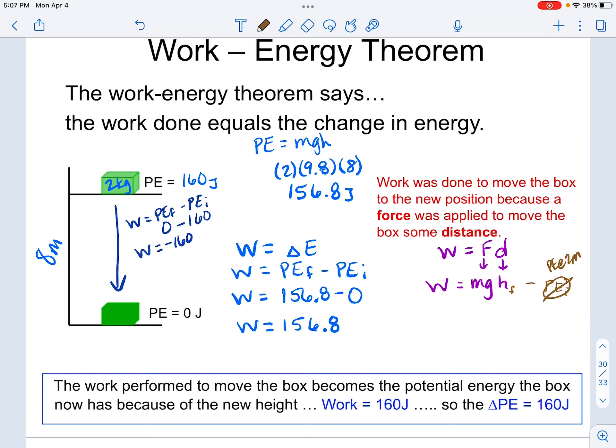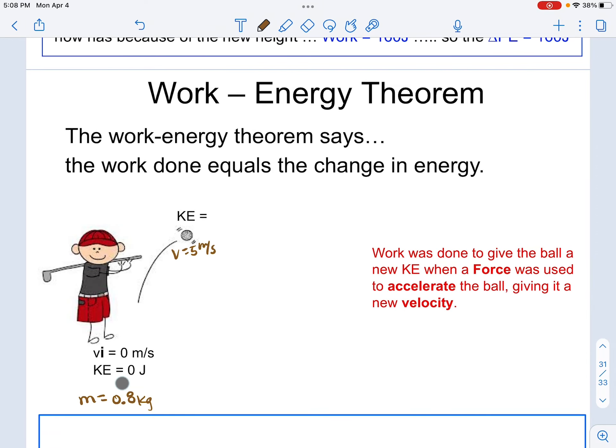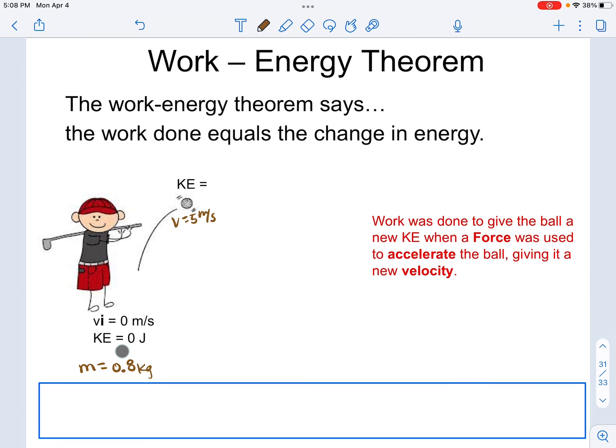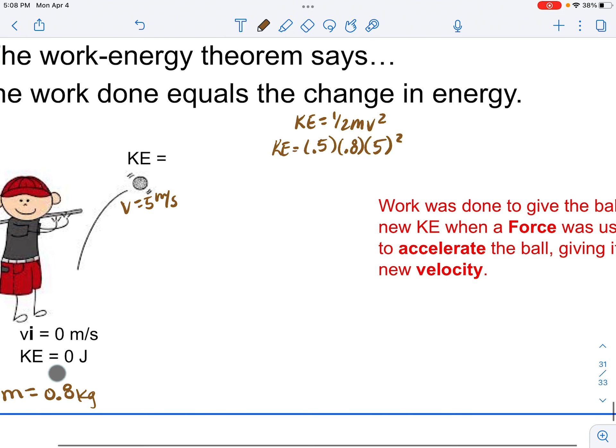Now, this is a statement, or the work energy theorem is a statement that is true for both potential and kinetic energy. If I have a golf ball that is sitting on the floor, this golf ball is initially at rest, and therefore it has zero joules of kinetic energy. If I'm told that the mass of this golf ball is 0.8 kilograms, and the boy hits the ball, and now it is flying through the air with a velocity of 5 meters per second, well, conceptually, I should understand that the object now has kinetic energy, and I'm going to calculate that by doing one-half mv squared, where my kinetic energy is going to be half of 0.8 times 5 squared, which is going to give me 10 joules.